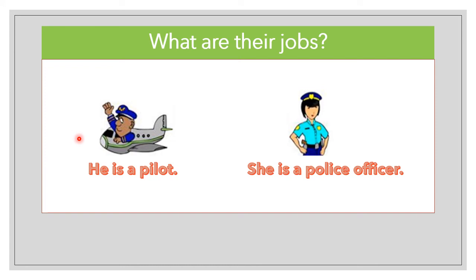For the first one we use he, because he is a man. For a lady or a girl we use she. She is a police officer. It's important to use the article a or an for jobs or professions. She is a police officer. He is a pilot.